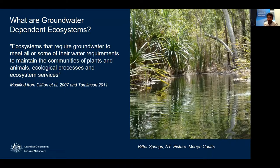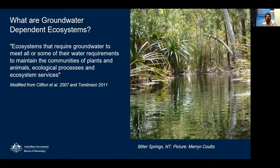A groundwater-dependent ecosystem is an ecosystem that requires groundwater to meet all or some of its water requirements, to maintain communities of plants and animals, ecological processes, and ecosystem services. In short, it's any ecosystem that requires access to groundwater to function properly. The groundwater can feed it all the time or intermittently, and can supply the entire volume or just a component. As long as there is a requirement for groundwater, it's a GDE.